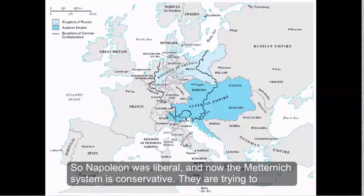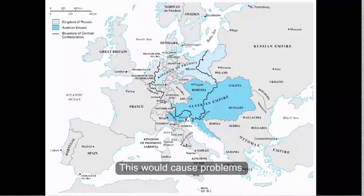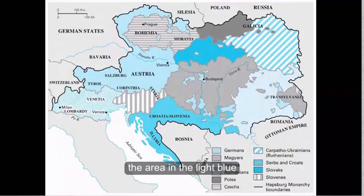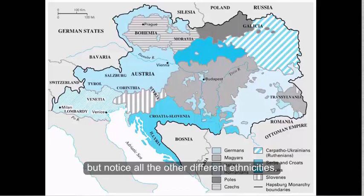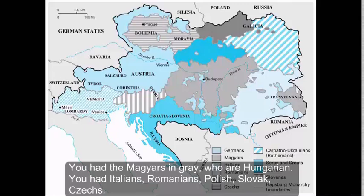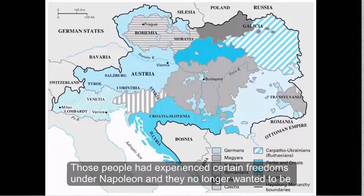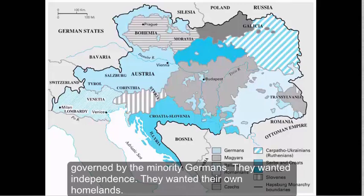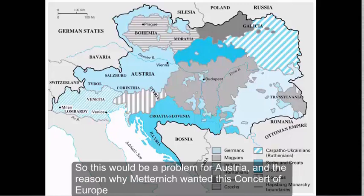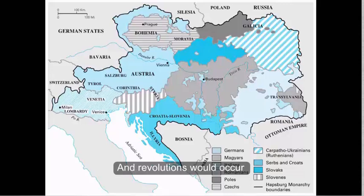So Napoleon was liberal and now the Metternich system is conservative — they're trying to go back to the way things were, and this would cause problems. Additionally, inside of Metternich's Austria, the area in the light blue is the Germanic area. But notice all the other different ethnicities: you had the Magyars in gray who are Hungarian, as well as Italians, Romanians, Polish, Slovak, and Czechs. Only 25% of the population of the Austrian Empire was German, meaning 75% were other people. Those people had experienced certain freedoms under Napoleon and they no longer wanted to be governed by the minority Germans. They wanted independence and their own homelands. So this would be a problem for Austria, and the reason why Metternich wanted this Concert of Europe was to prevent instability.